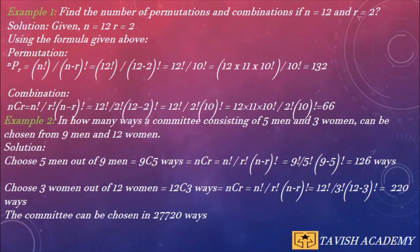Solution: Now we have to choose 5 men out of 9 men, which is equal to 9C5 ways. Therefore, nCr = n! / (r! × (n-r)!).